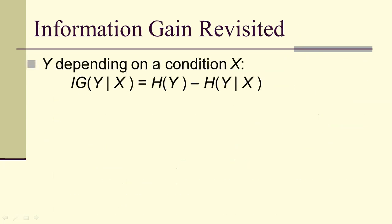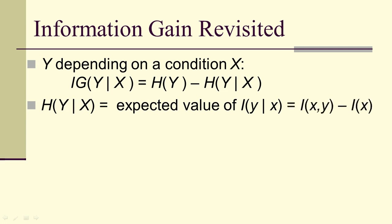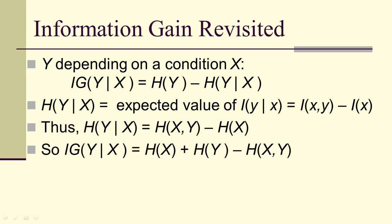Let's revisit information gain also. It was the entropy of Y minus the entropy of Y conditioned on X. The conditional entropy of Y given X is the expected value of the self-information of Y given X, which is the joint self-information minus the self-information of X. So the conditional entropy of Y given X is the joint entropy minus the entropy of X.